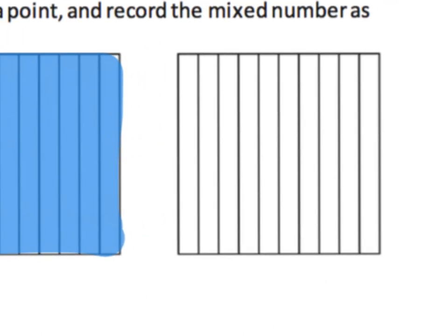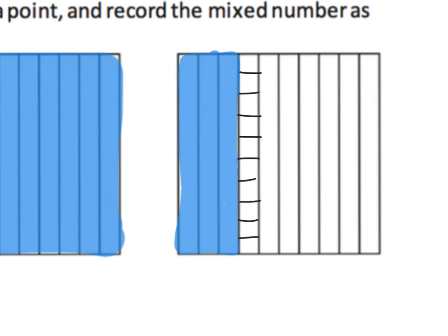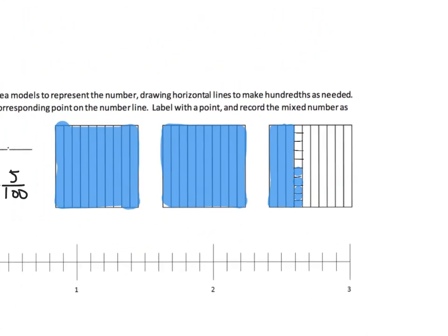First we shade in three tenths: one, two, and three. There is our three tenths, which is the same as thirty hundredths because it's ten plus ten plus ten. Then we need to shade in five hundredths, so I'll cut that section in half and then each half into five pieces. We want to shade in five of those: one, two, three, four, five.